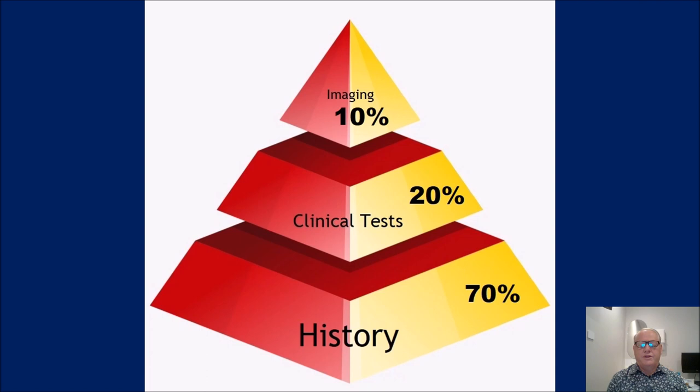This is a really good point. When we look at injuries, 70% of what we suspect the injury to be will come from the history. That's very important — we must take a history. Many times in imaging we're just told to take a picture and get on with the job, but naturally the history is very important. How did this happen? What is the time frame? How long since the injury?